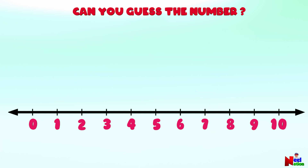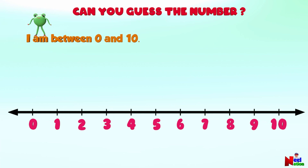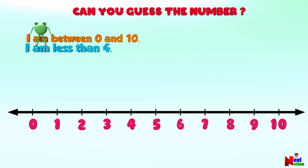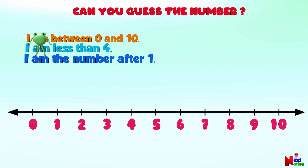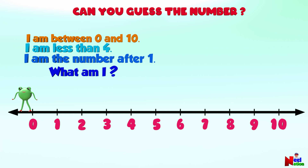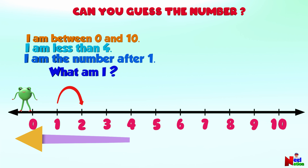Okay, let's get to the next guess. I am between zero and ten. I am less than four. I am the number after one. What am I? Let's look at the clues one more time: between zero and ten, less than four, the number after one. Two! Yes, the number is two — you are awesome!